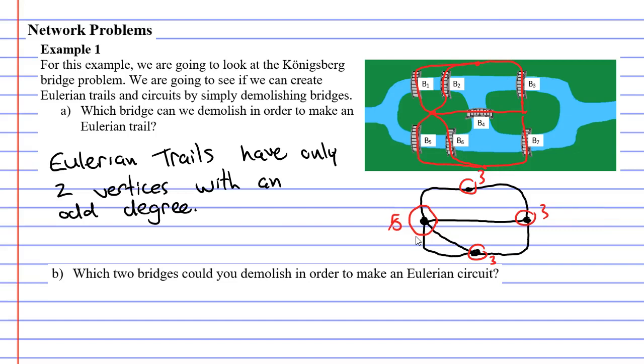Let's try a different bridge. Let's try demolishing bridge 3. You now have two vertices with a degree of 2. Once again, we now have an Eulerian trail. In fact, you'll find that you can demolish any one of those bridges and you will have an Eulerian trail.